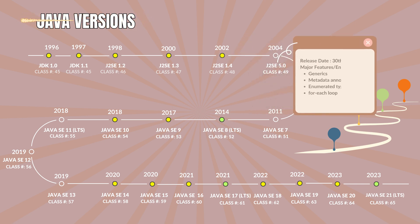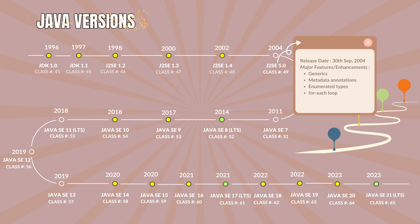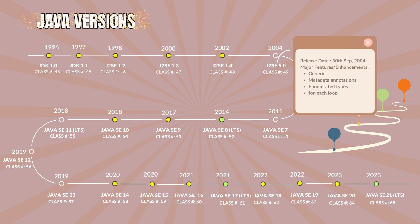Java 1.5 with the class file version 49. It was codenamed as Tiger. It was released on 30th September 2004. The major features and enhancements are Generics, metadata annotations, enumerated types, and the for-each loop.